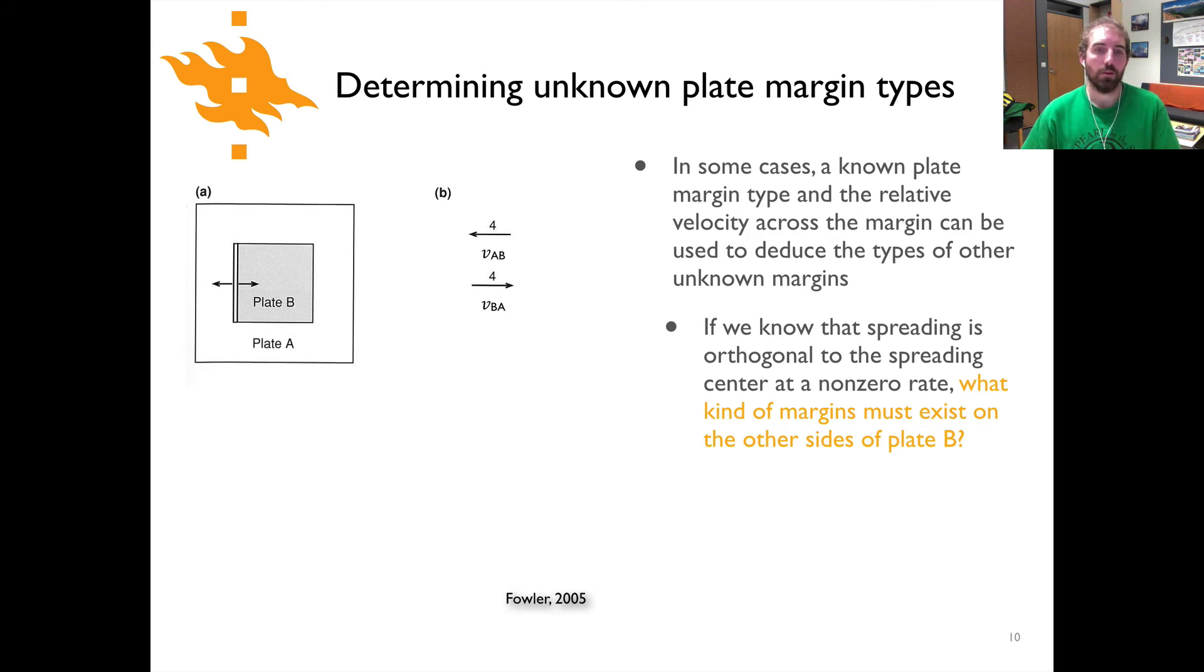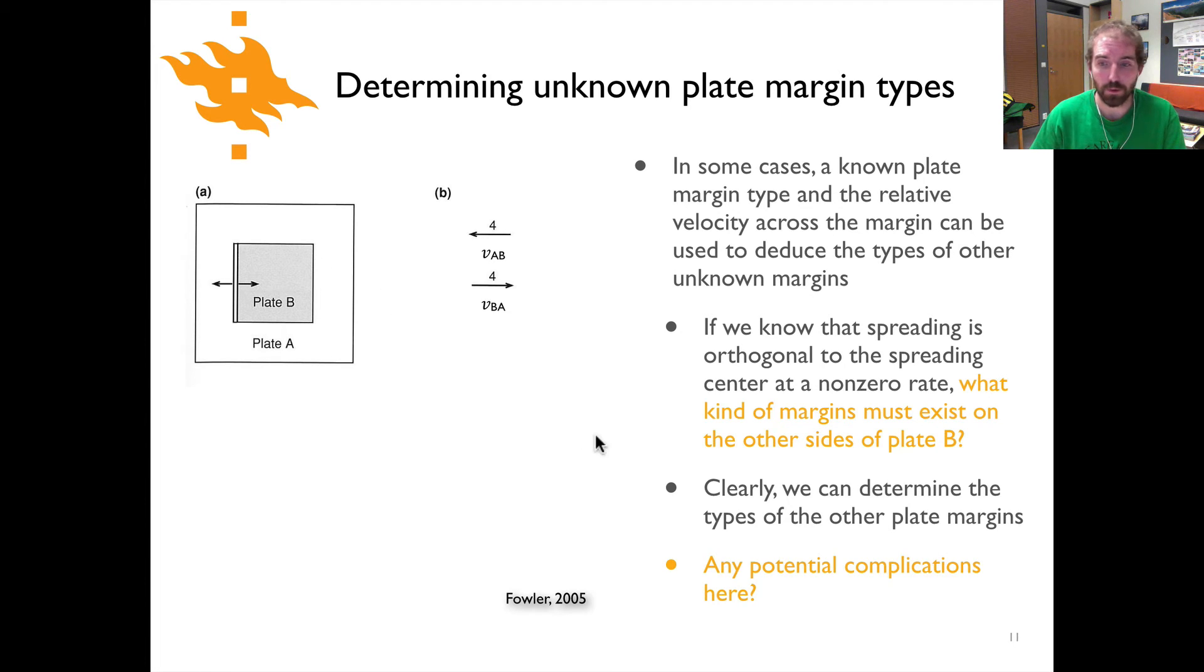Well, let's see how you've done. We know we have our spreading ridge along the left side, and if it's spreading relative to plate A then we would expect to see plate B moving off to the right, which means we're going to have transform boundaries on the top and bottom if we have perpendicular motion of the spreading ridge along the left side of plate B. We also know that if we're pushing this plate over we should have some kind of subduction boundary over here on the right. So we can clearly determine a little bit about this picture just from knowing one of the plate boundaries.